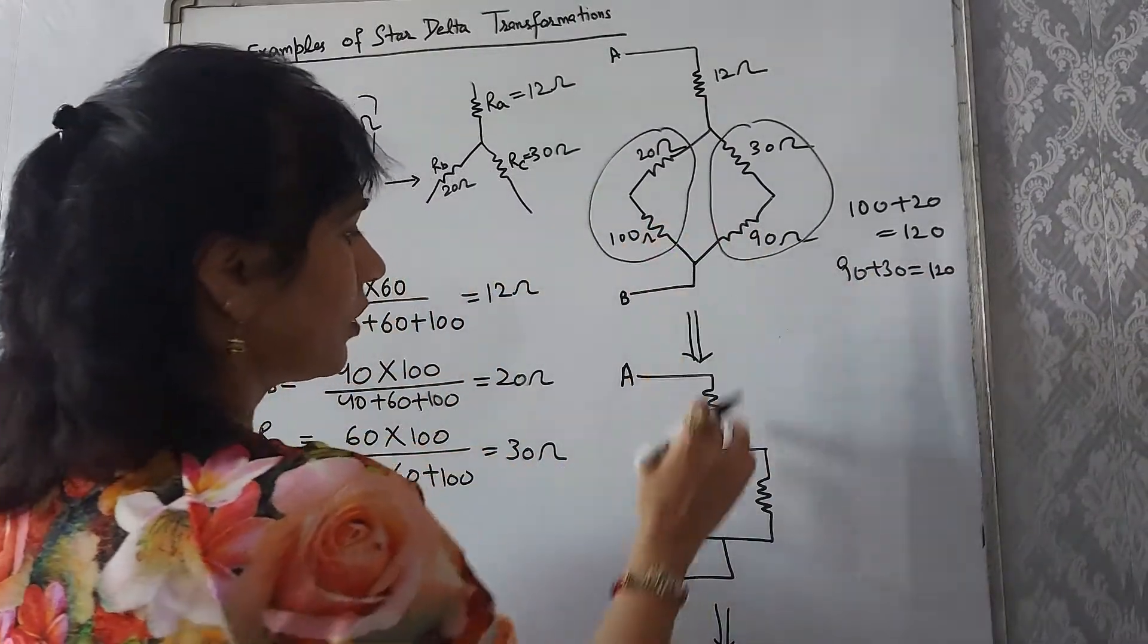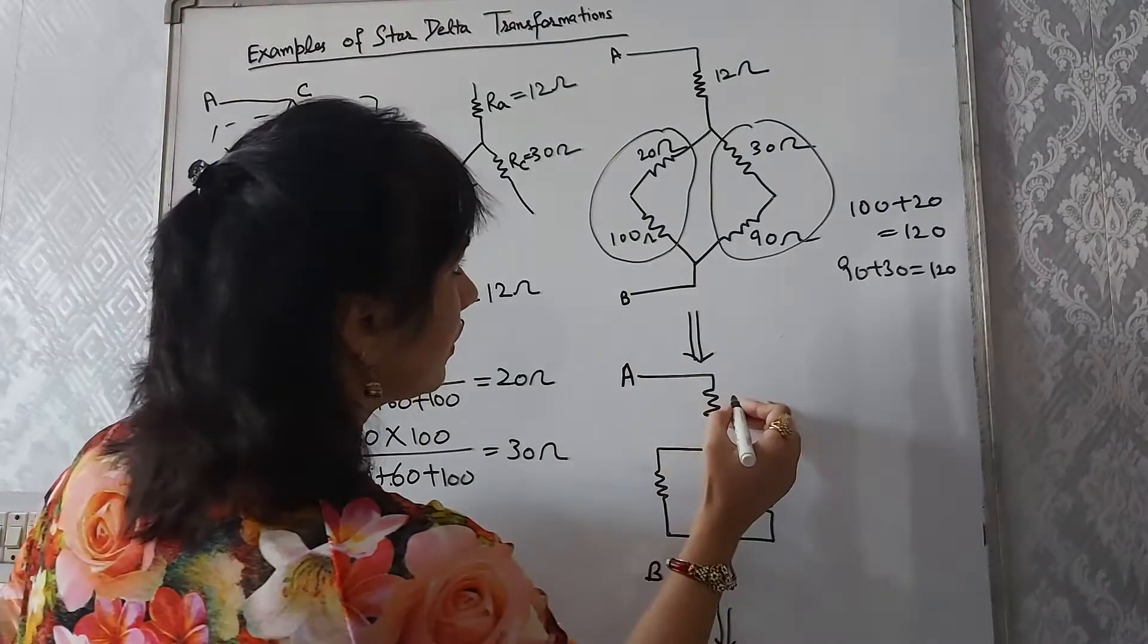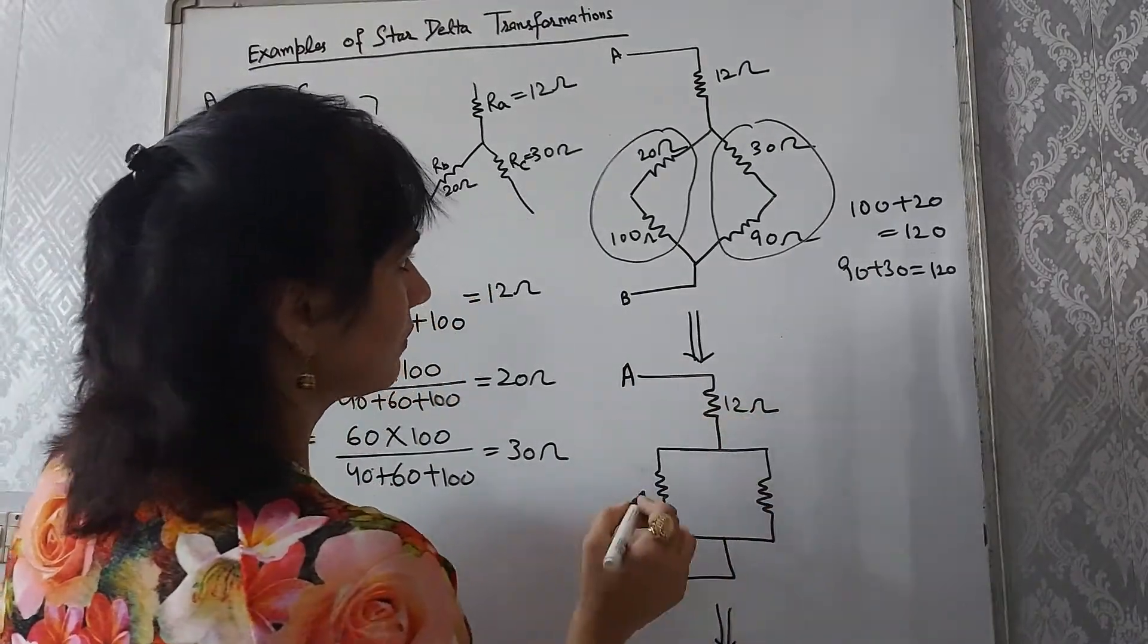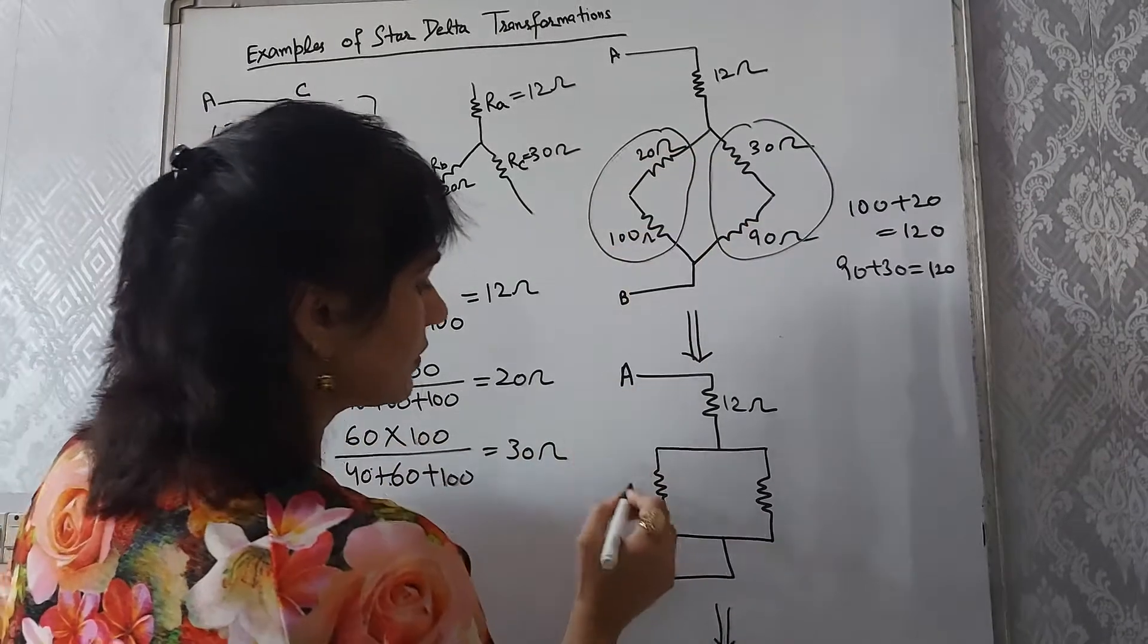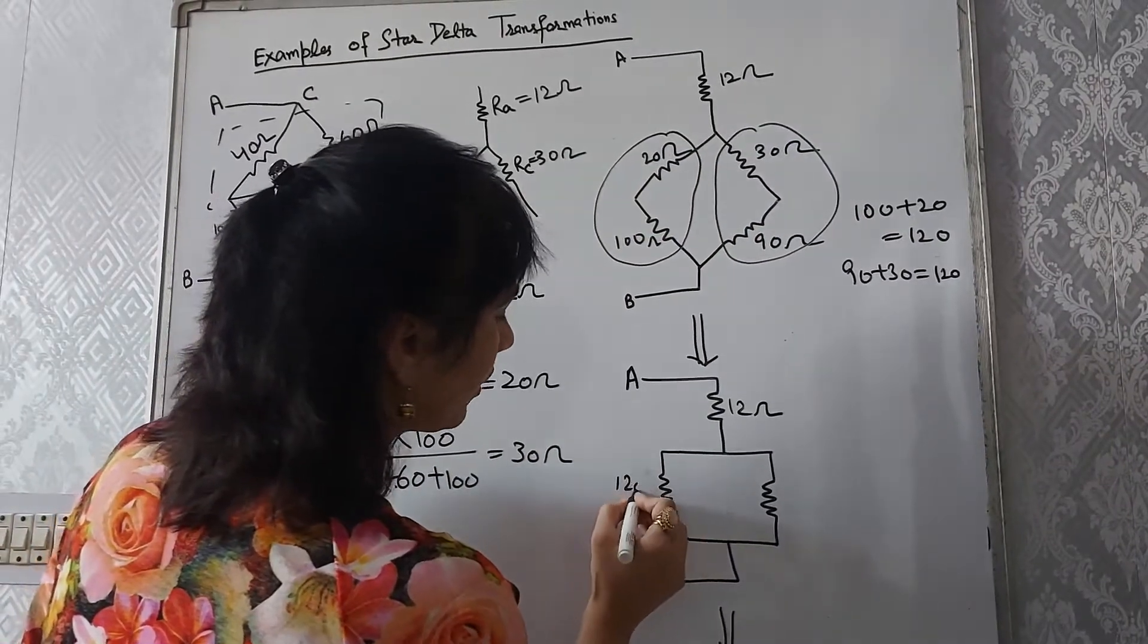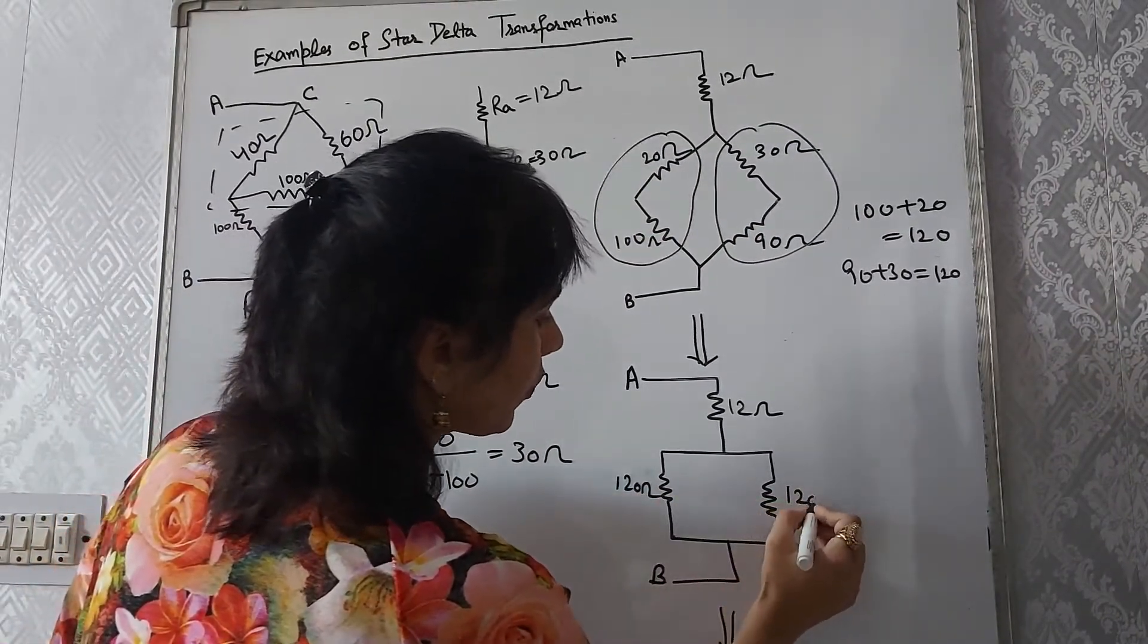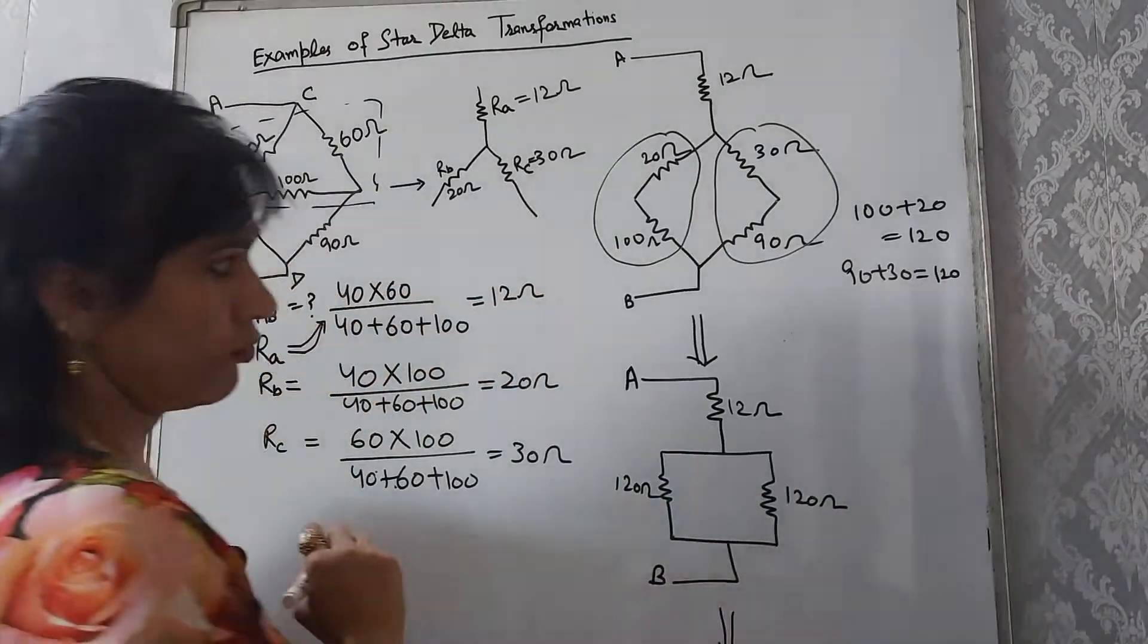So we redraw the circuit. This will be our 12 ohm resistance remaining the same, and these two series resistances, 120 ohm and 120 ohm.